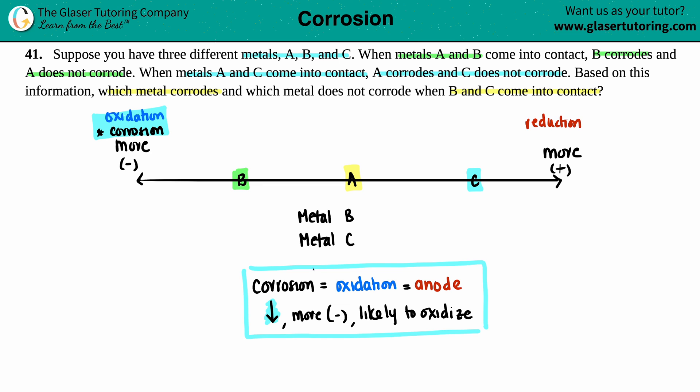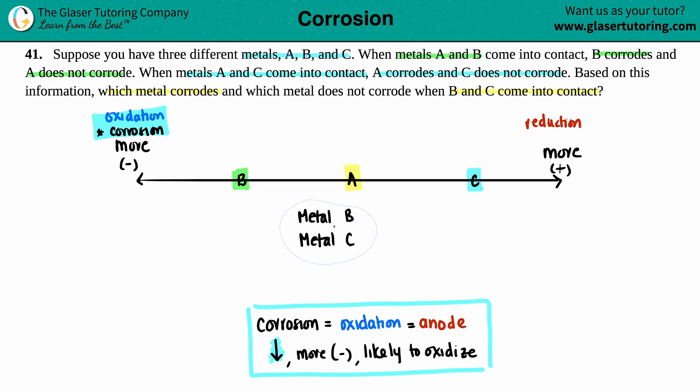Which one is going to corrode? The one that's more likely to go down downstream. So metal B is the one that's going to corrode. And metal C, since it's all the way up here next to the reduction, there's no corrosion over here. So no corrosion. And that is your final answer. B is going to be the one that corrodes and metal C does not.